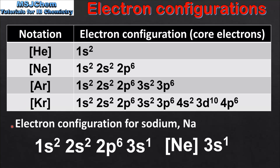As we saw earlier, the electron configuration for sodium is 1s2, 2s2, 2p6, 3s1. The condensed electron configuration is [Ne] 3s1. The symbol Ne in square brackets represents the core electrons in the 1s2, 2s2, and 2p6 sublevels.